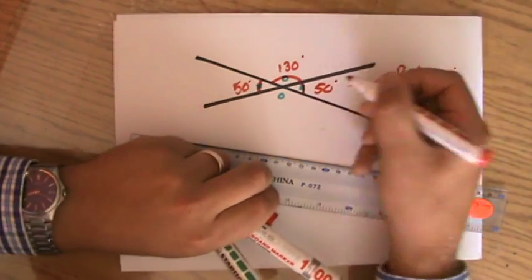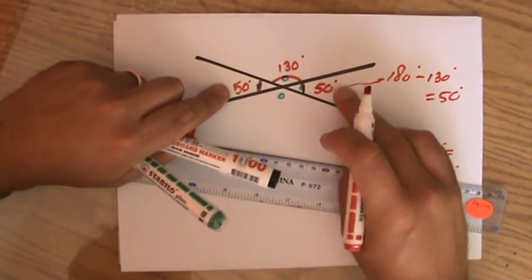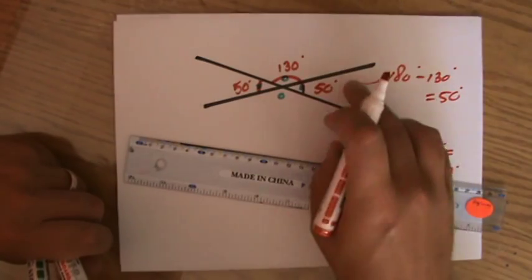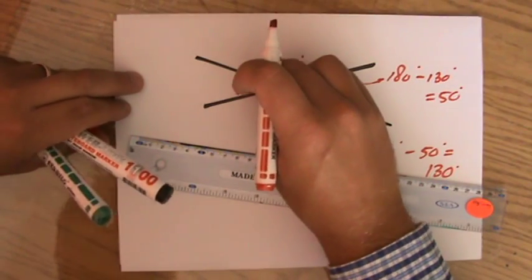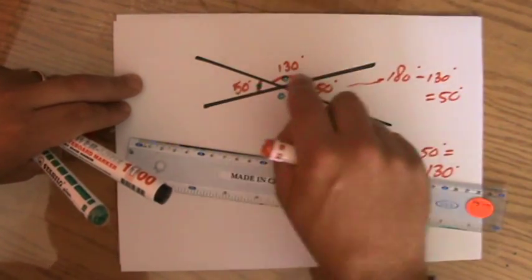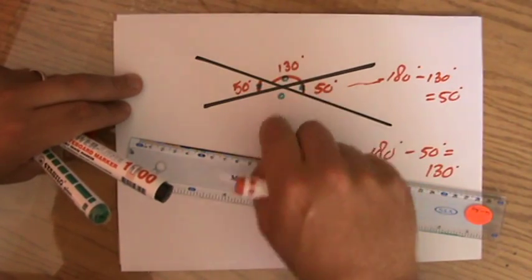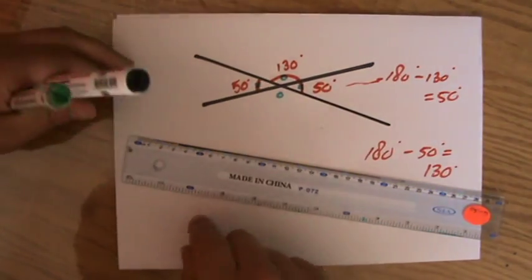As you can see now, those opposite angles, those vertically opposite angles are equal. In a full turn, 360 degrees. So you could do 360 minus 50 minus 50 minus 130, and you'll notice that it's going to be 130 again.